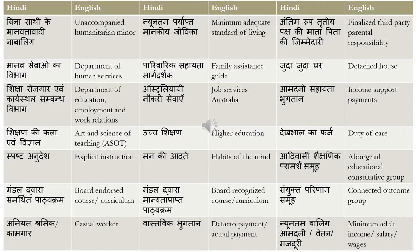The next one is 'Aamdani Sahaita Bhuktan' or 'Aamdani Samarthan Bhuktan' — that is income support payment. Support can be called Sahaita, which is like assistance, or Samarthan. Payment is translated as Bhuktan.